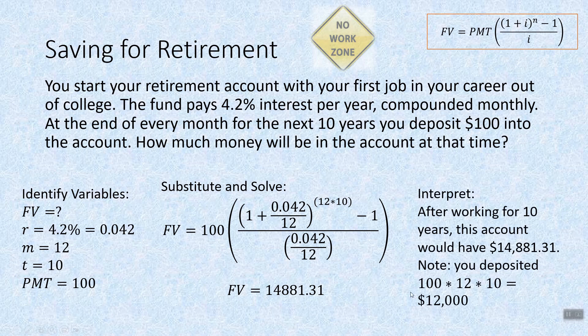Keep in mind: you put $100 in every month for 10 years, so you put in $12,000. That means $2,881.31 is the amount of interest you've earned over those 10 years, which is pretty cool.